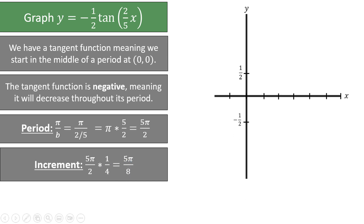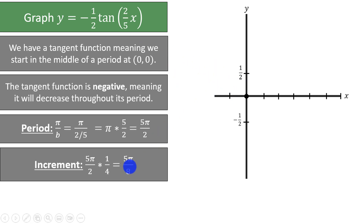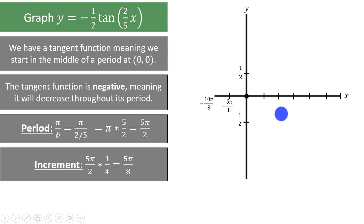Let's graph the function. Since we have a tangent function, we know that we start in the middle of a period at (0, 0), so we can plot that point. I like to start graphing at the beginning of a period, so I typically increment twice to the left. Our increment is 5pi over 8, so we will have negative 5pi over 8 and negative 10pi over 8. If we increment six times to the right, we will have enough points for two periods. At negative 10pi over 8, we are at the beginning of a period, which means we must have an asymptote.